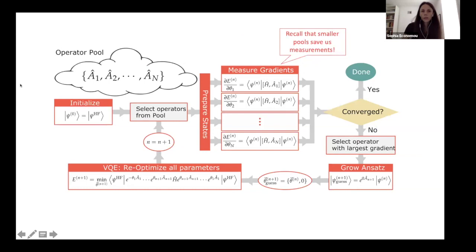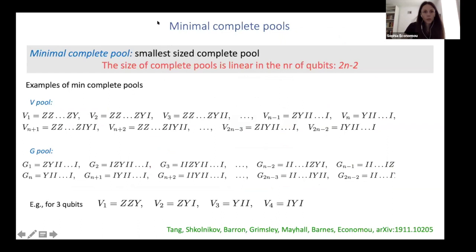And now we're interested not only in complete pools, but we're interested in how much can we get away with shrinking our pool, since that incurs more measurements here and still be able to have convergence. So that leads to the idea of minimal complete pools. So minimal complete pool is the smallest size complete pool. And we have actually shown that this is linear in the number of qubits. So this is really nice because it means that you only have a linear overhead in extra measurements in the number of qubits. And these are just some examples of such pools.